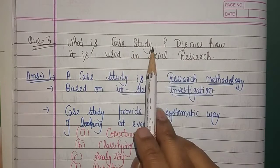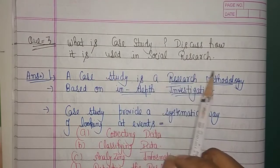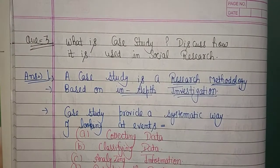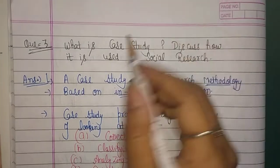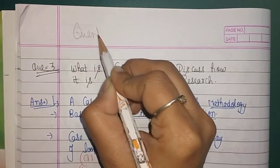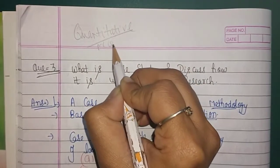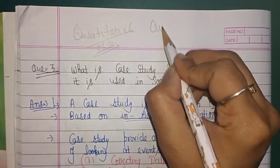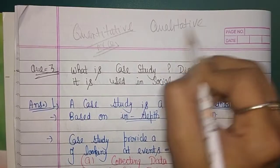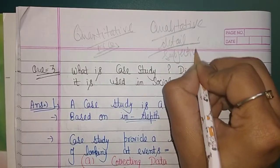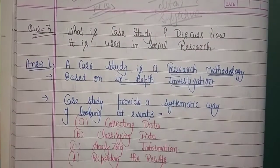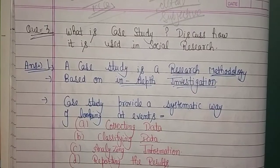So what is a case study, and how is it used in social research? When we have to gather data, we have two ways: quantitative and qualitative. Quantitative involves direct questions through MCQ, survey, or interview. Qualitative means we take in-depth and detailed information about something — subjective rather than objective. In a survey or interview type, we don't ask for a lot of details.